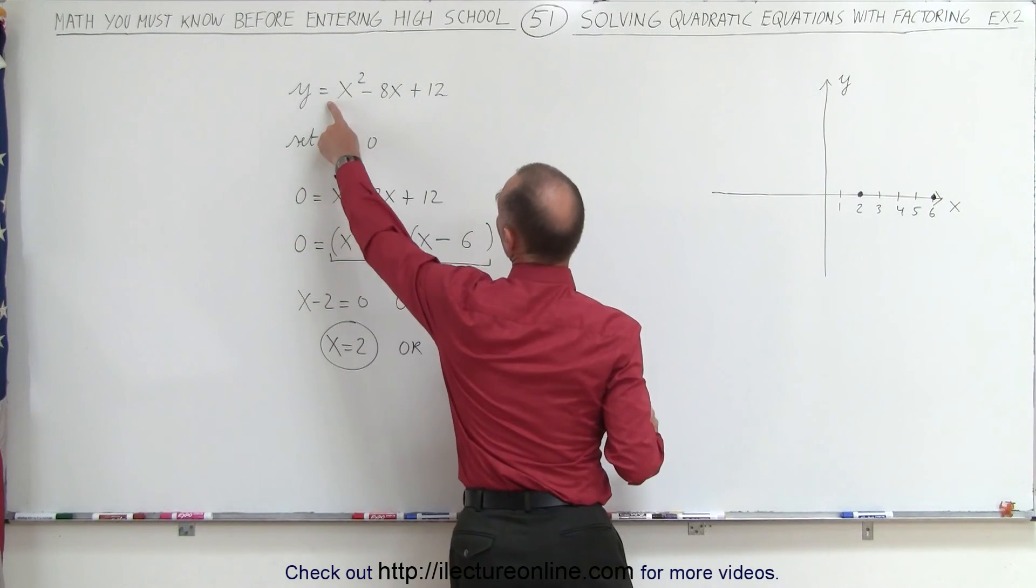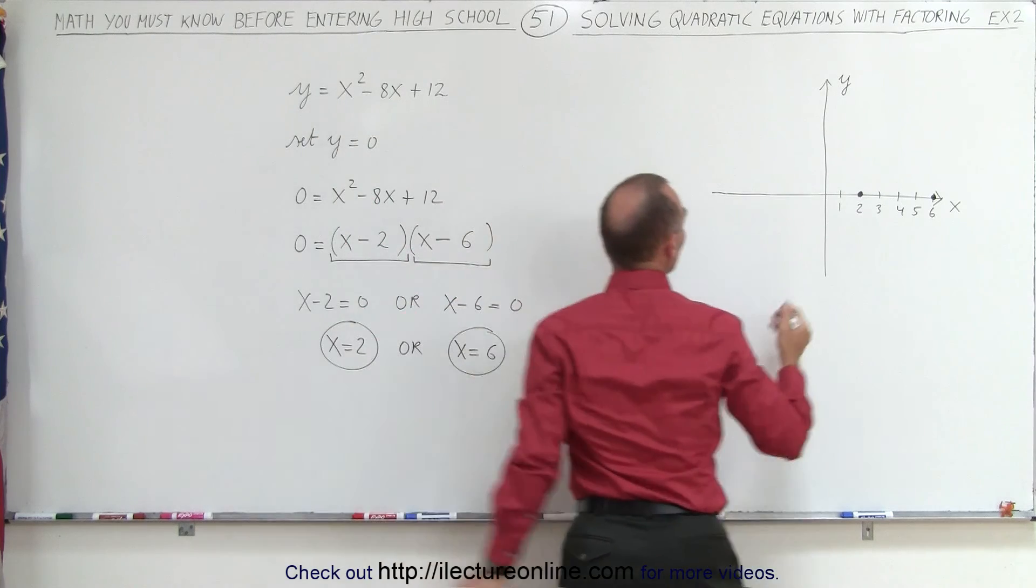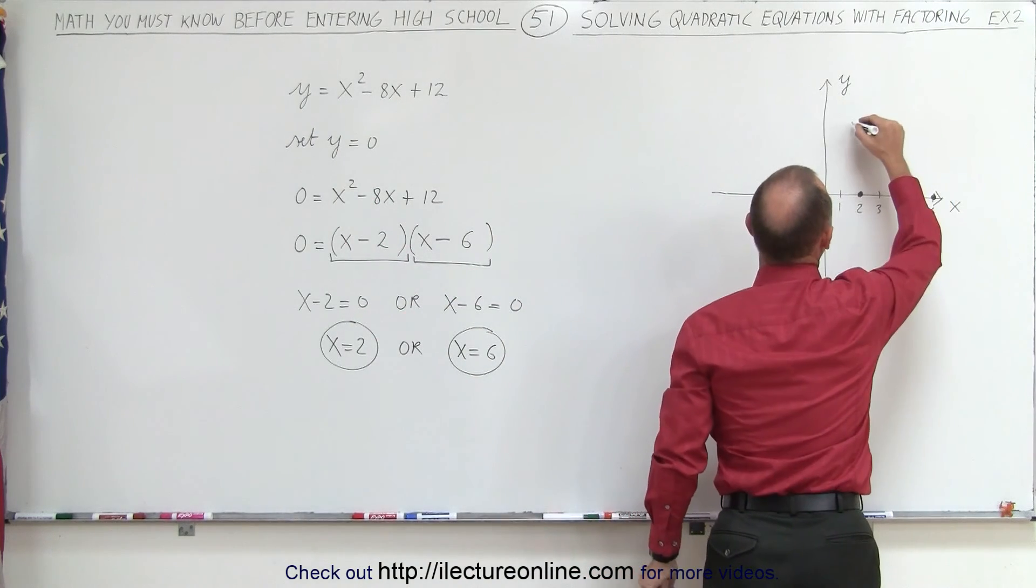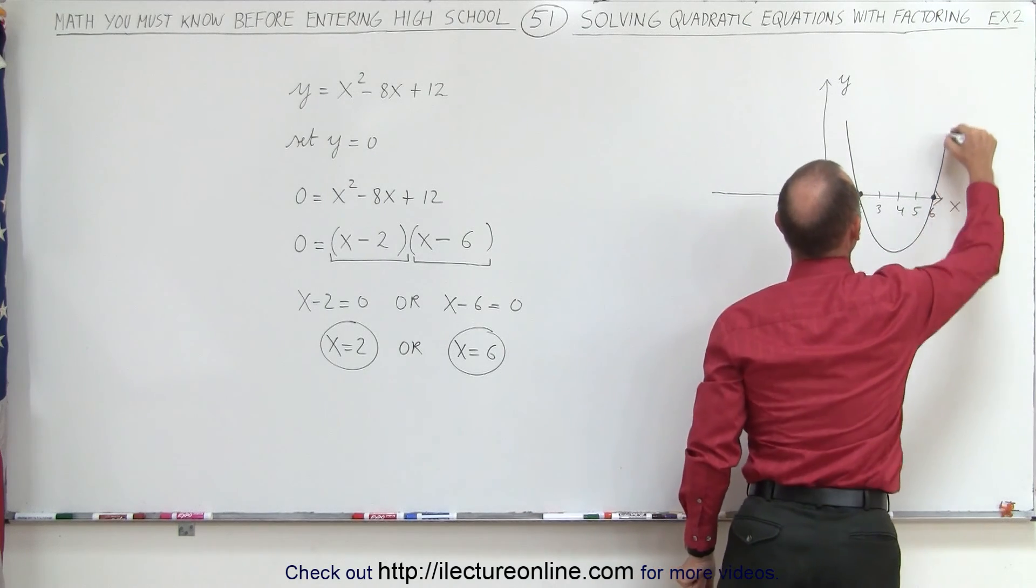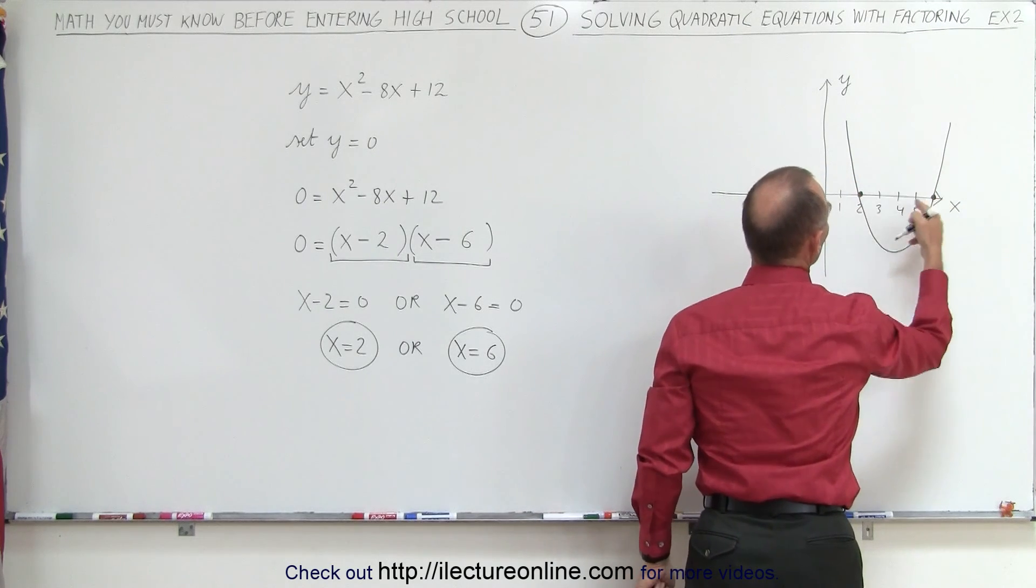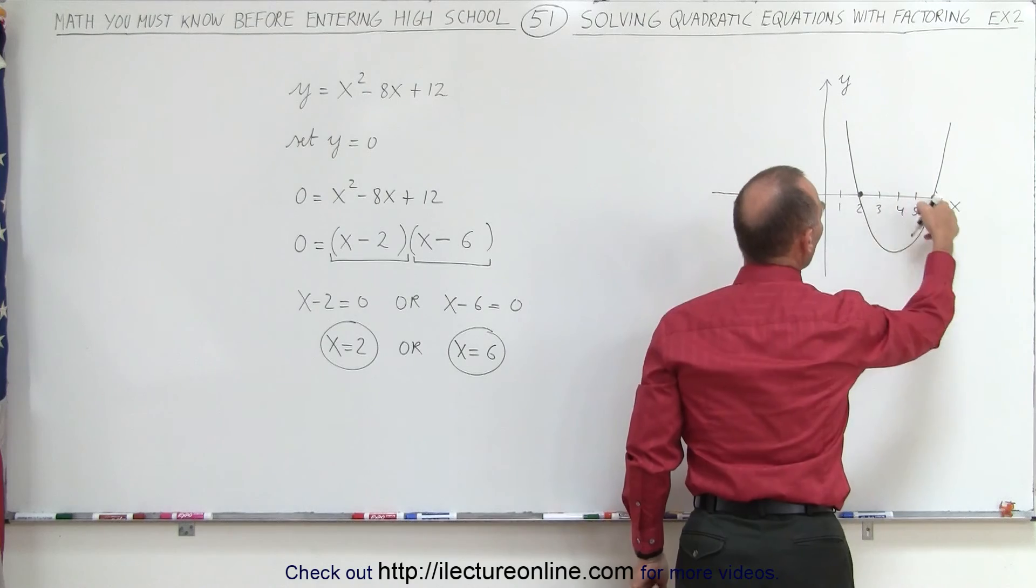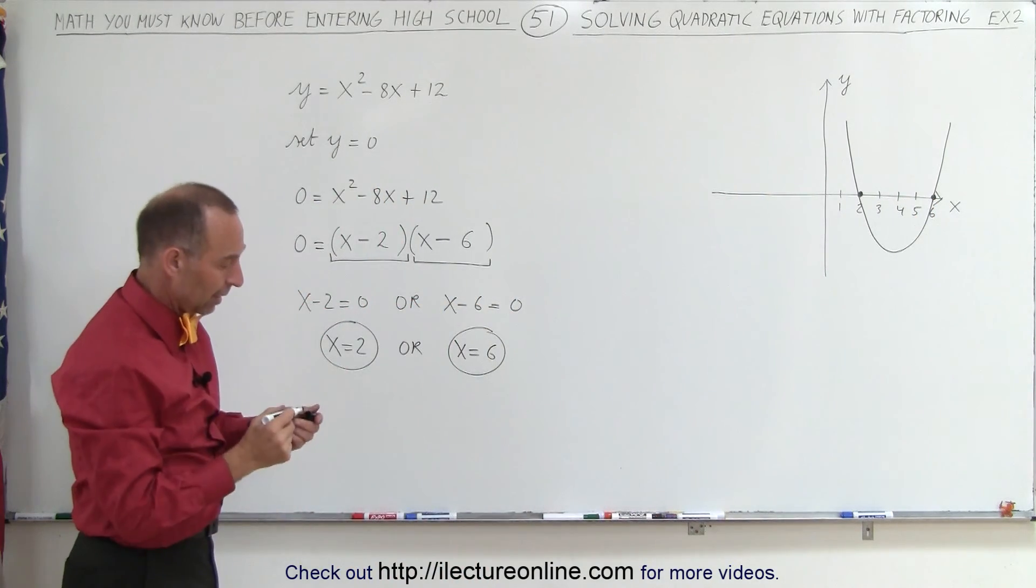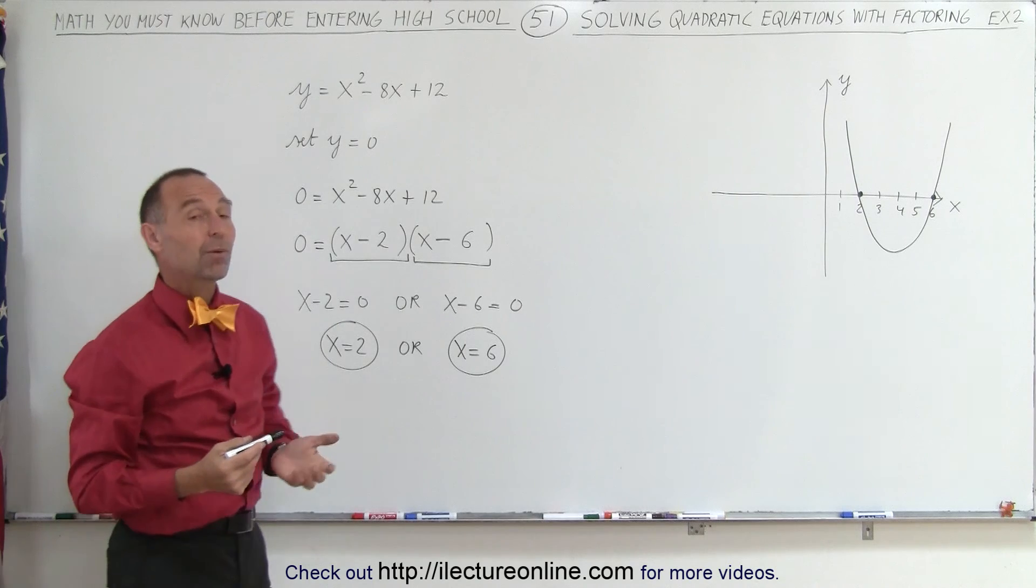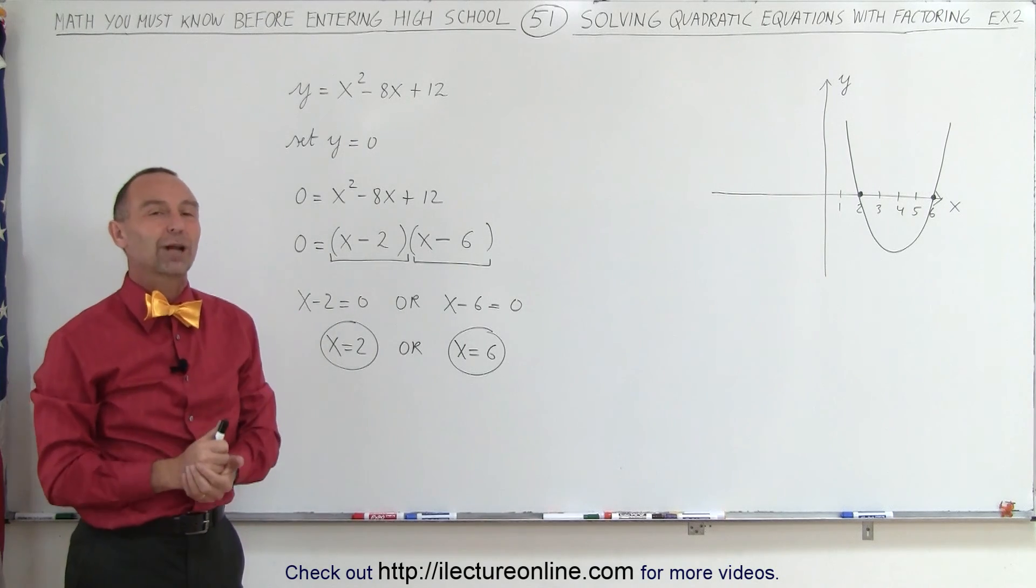Since the number in front of the x squared term is positive, we know that the parabola opens upward, so the graph will look something like this. And these are the solutions. The solutions are the points where the parabola crosses the x-axis at x equals 2, and x equals 6. And that's what we mean by solving a quadratic equation.